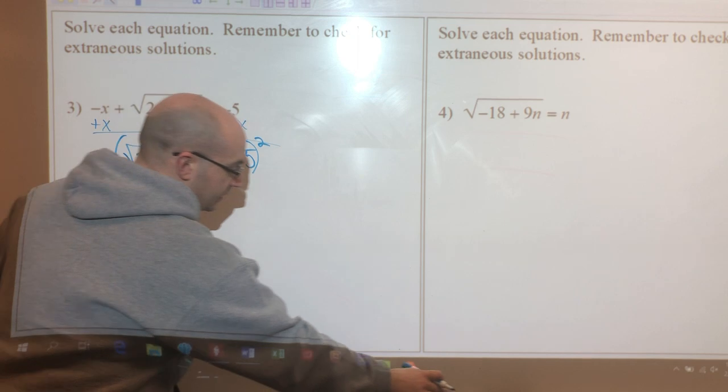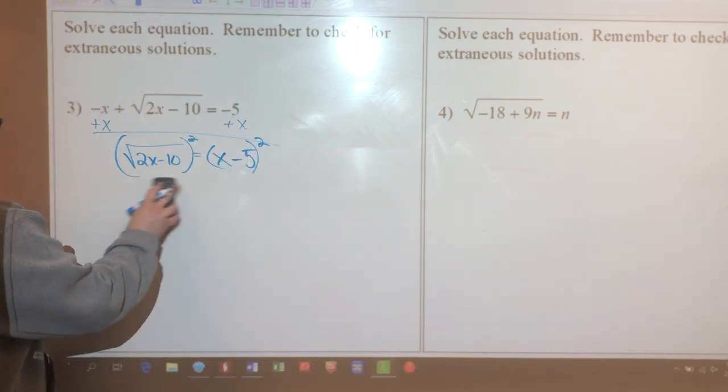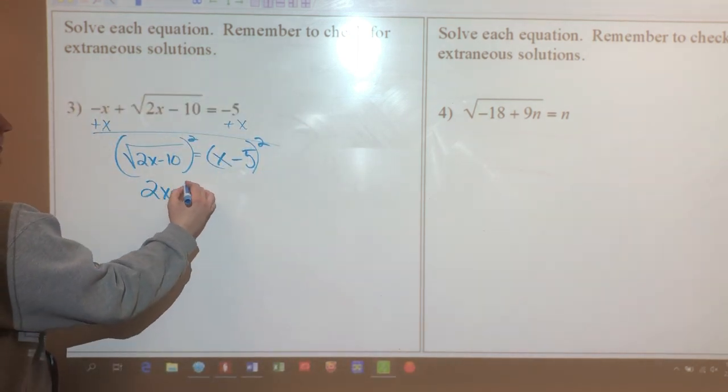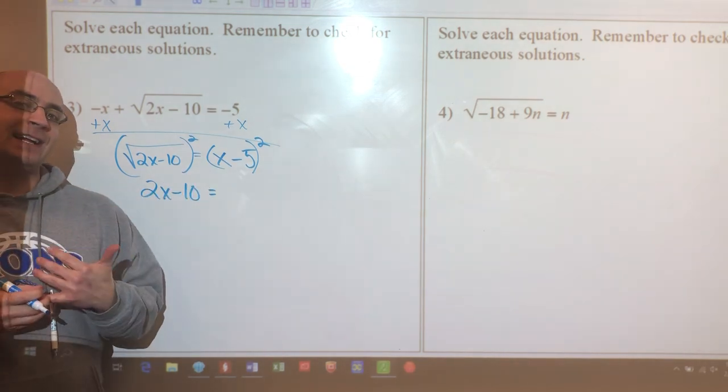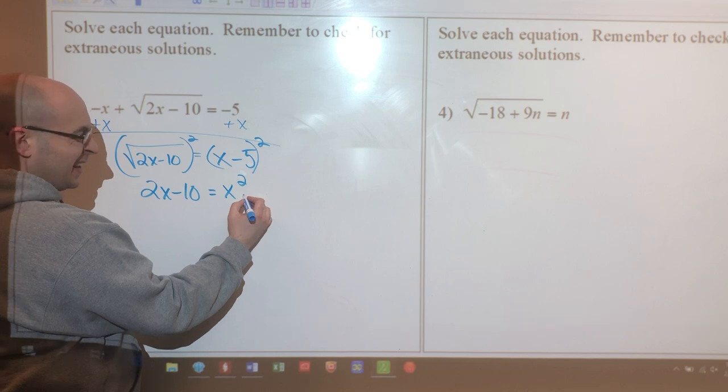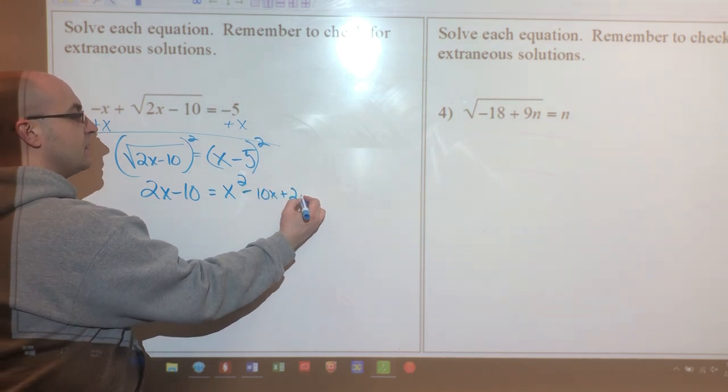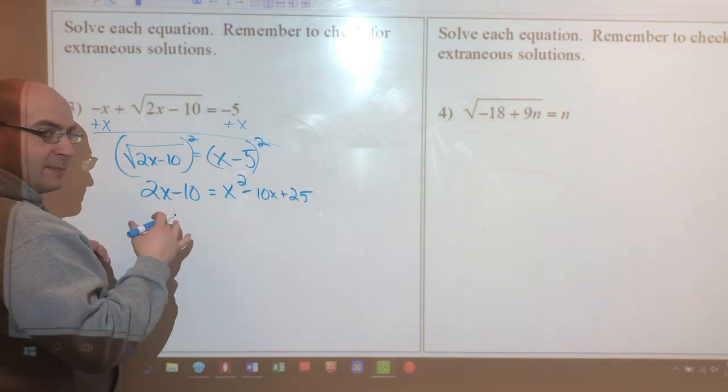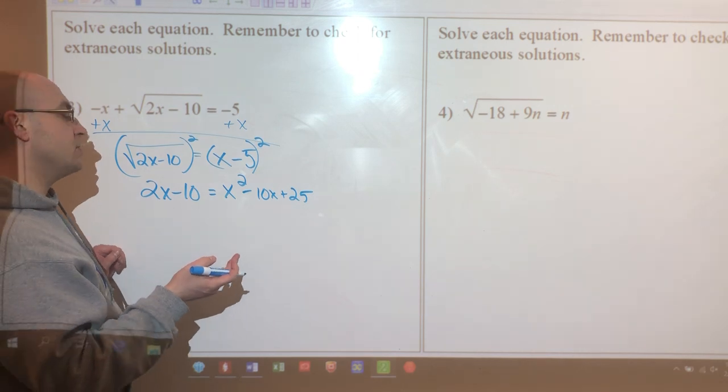On this side, which leaves me with 2x minus 10, and that's going to leave me with a binomial on the right-hand side, so I'm gonna have to FOIL that. Once I FOIL that, I'm gonna get x squared minus 10x plus 25.